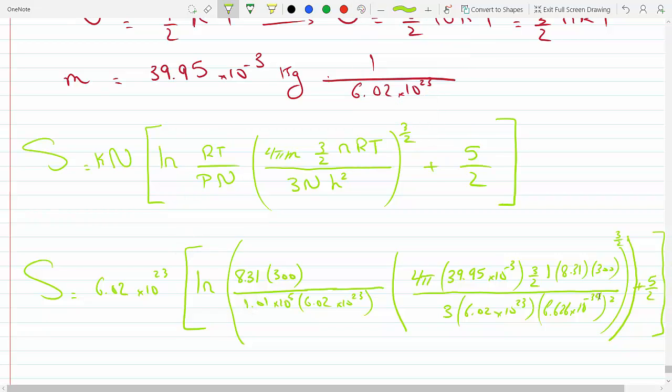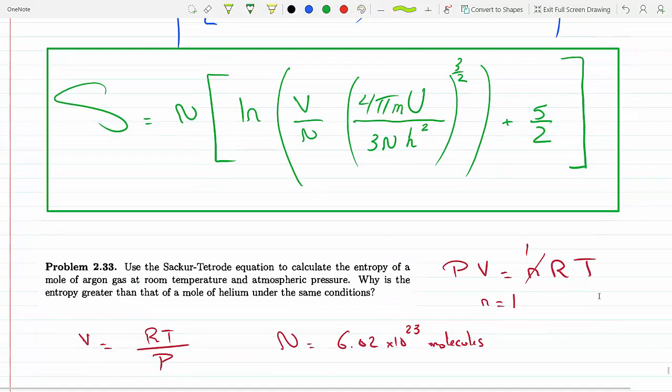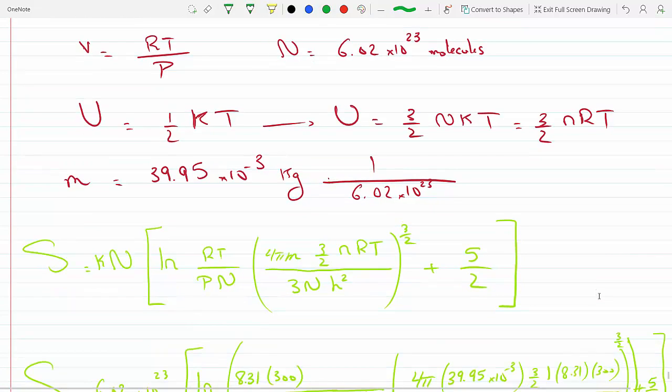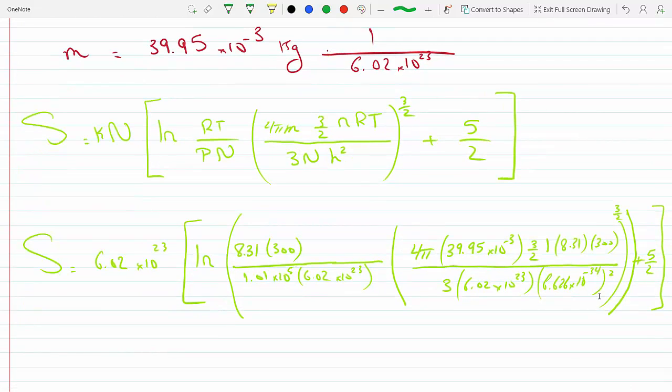I need to correct that on the previous problem. Entropy is K ln, Boltzmann's constant times the ln of the multiplicity, which I also did not put here. So with that said, this number here has to be multiplied by Boltzmann's constant.